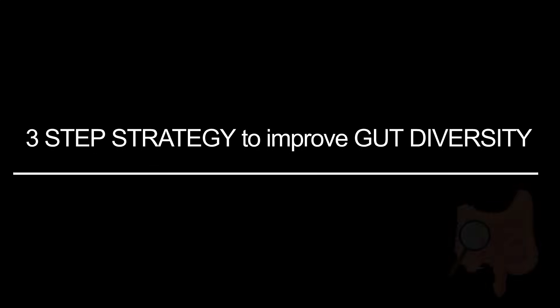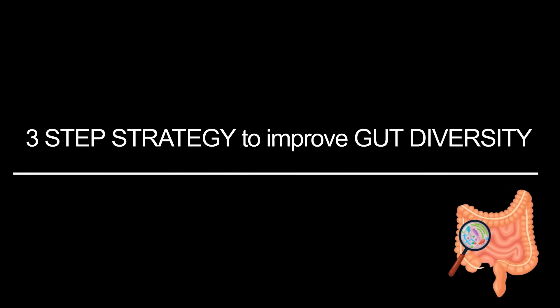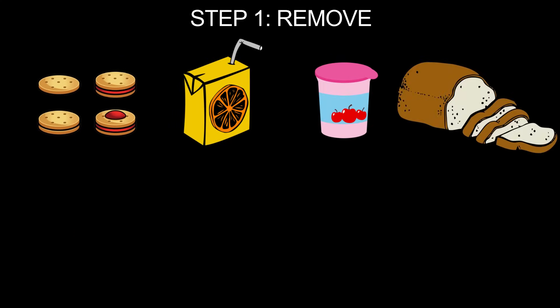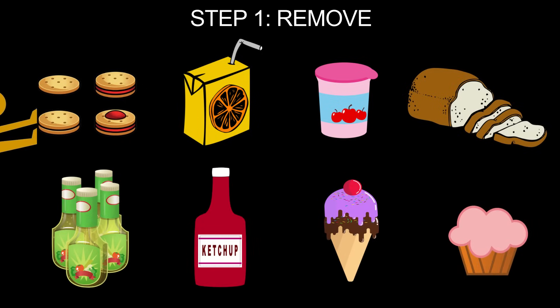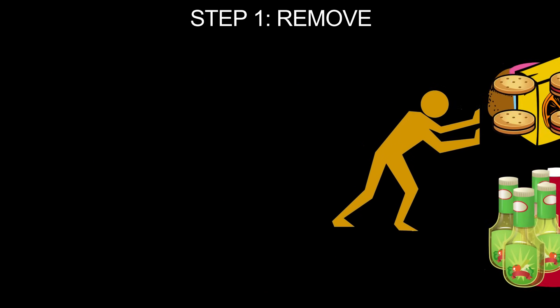Here comes my three-step strategy to improve your gut microbial diversity. Step number one is to remove or eliminate all ultra-processed food items from your diet. These include biscuits, fruit juices, flavored yogurts, industrial breads, salad dressings, ketchup, ice creams, confectionaries and more. A good rule of thumb is that if any packaged food contains more than three or four ingredients, you must stop buying and consuming it.